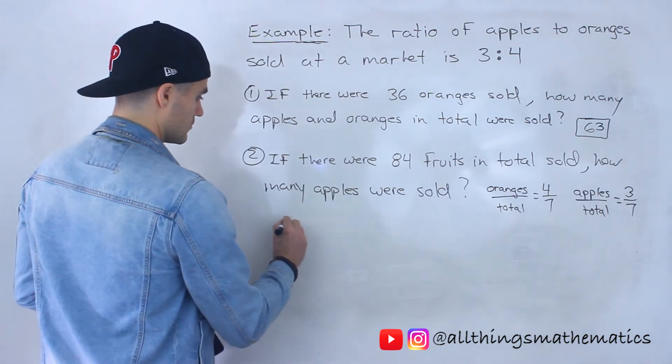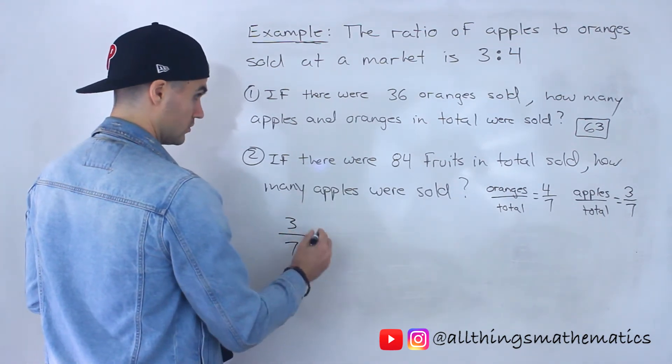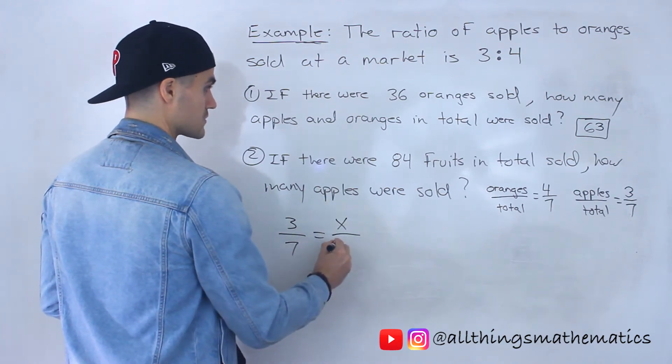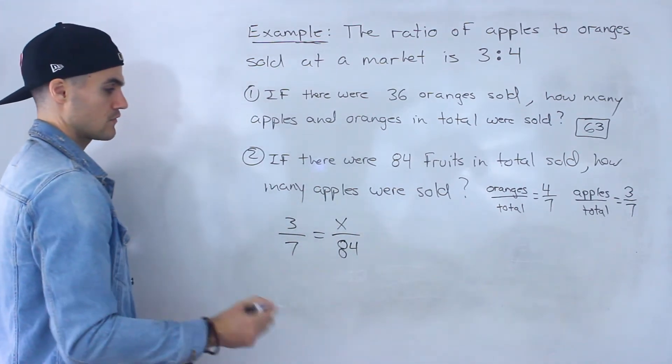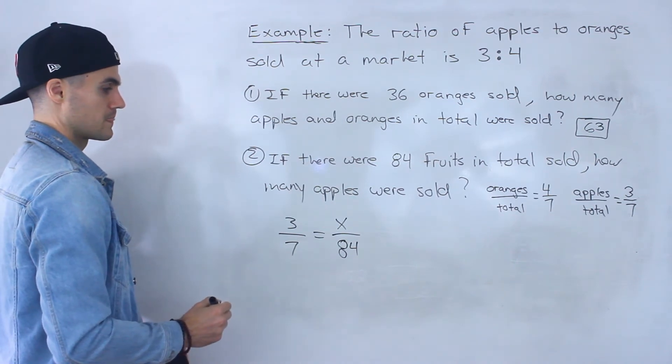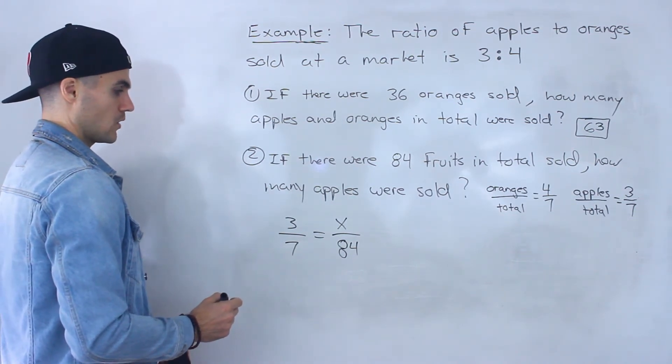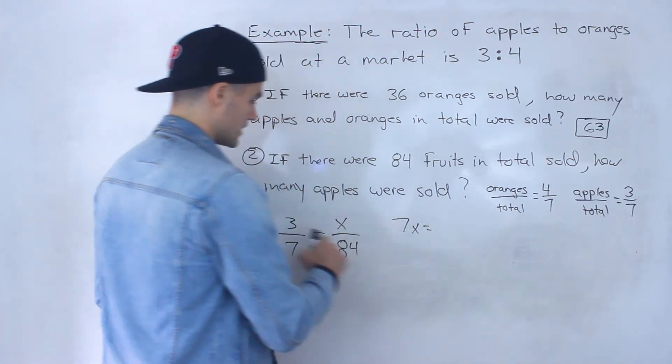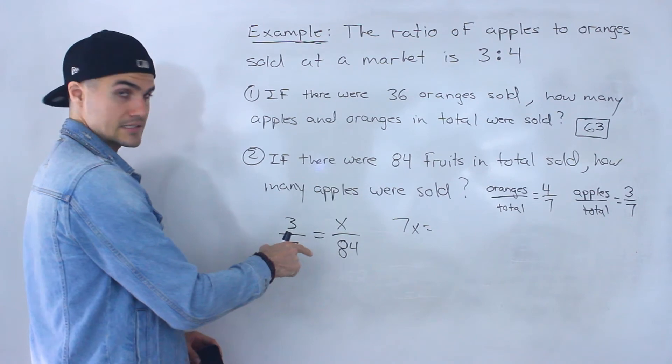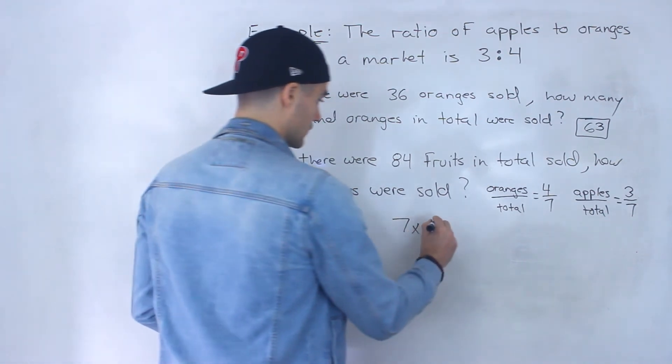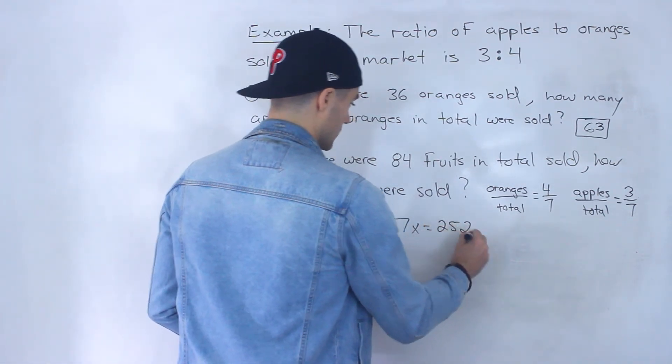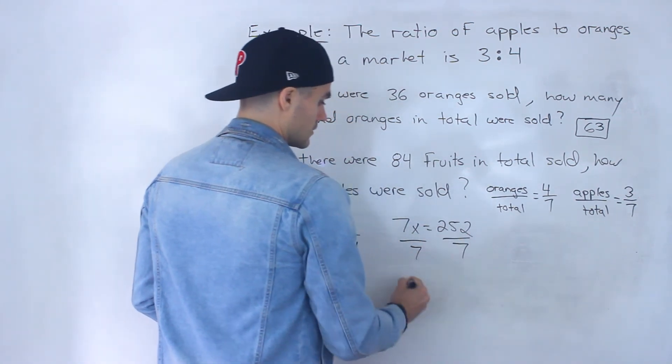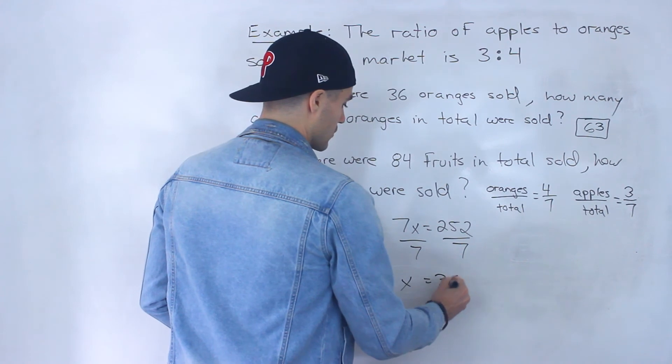So what we would do: apples to total equals, we're solving for the number of apples given a total of 84, like that. So what we do here, cross multiply again. We'd have 7x equals 3 times 84, which would give us 252. Then what we can do, divide both sides by 7, x would end up being 36.